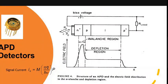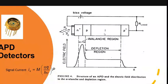Avalanche photodiodes internally multiply the primary signal current before it enters the input circuitry of the amplifier. The light falling on the junction excites electron hole pairs from the valence band to the conduction band. Those excited electron hole pairs in turn excite more electrons, creating more electron hole pairs, similar to stimulated emission in a laser.